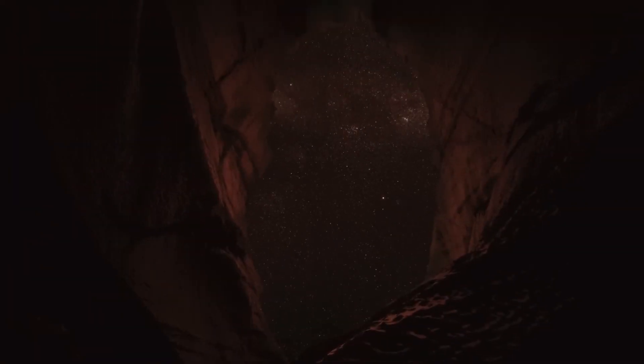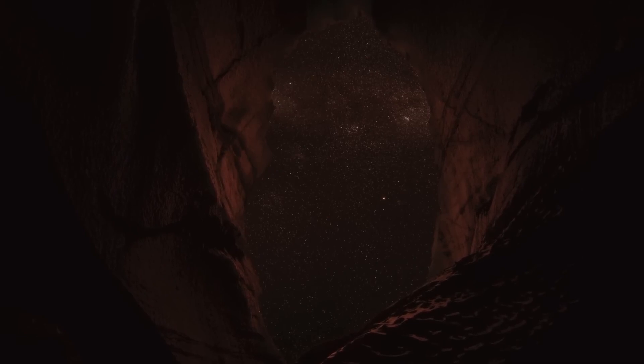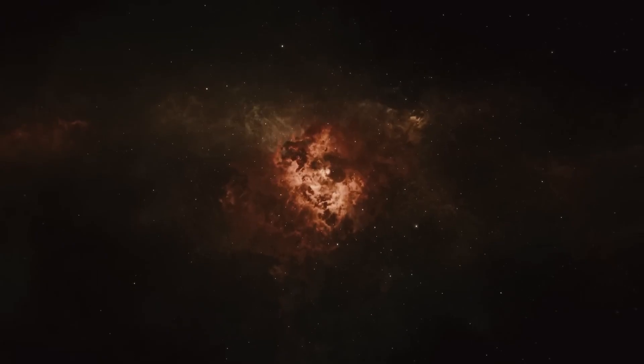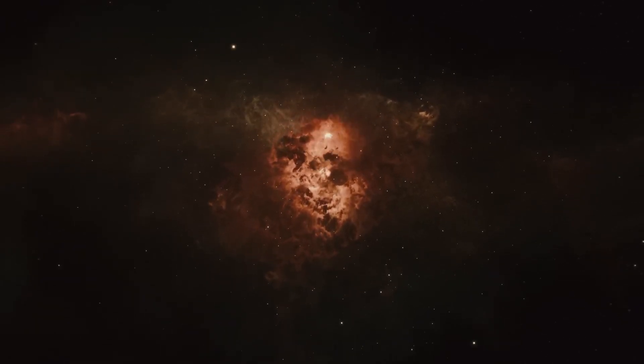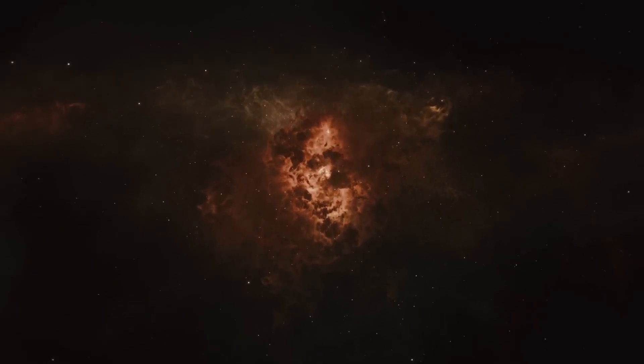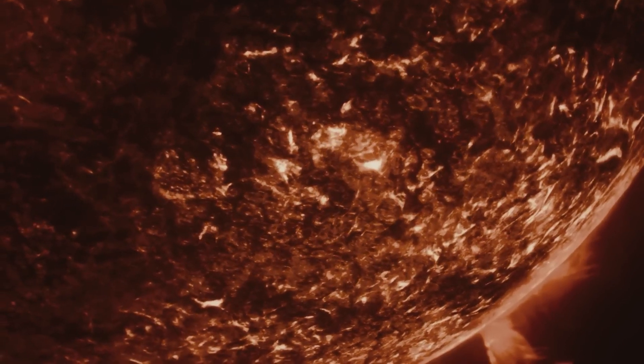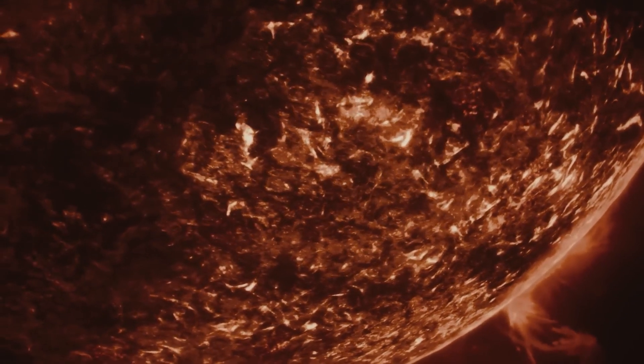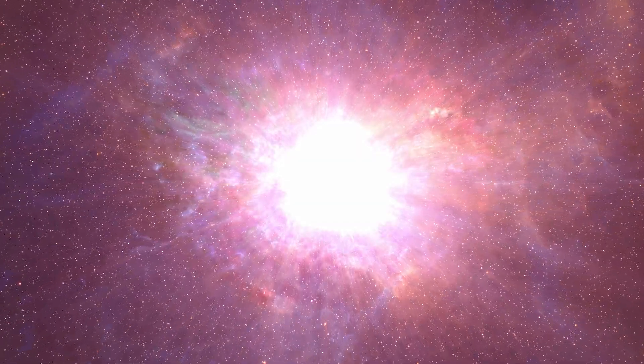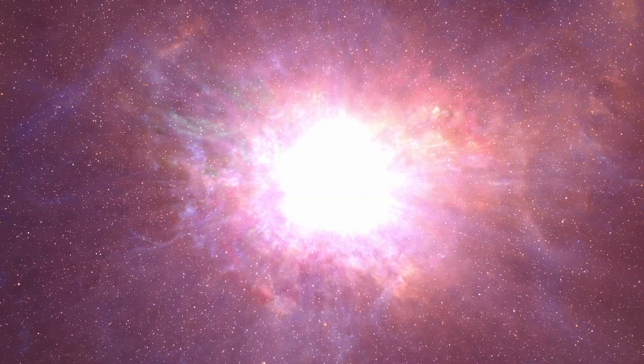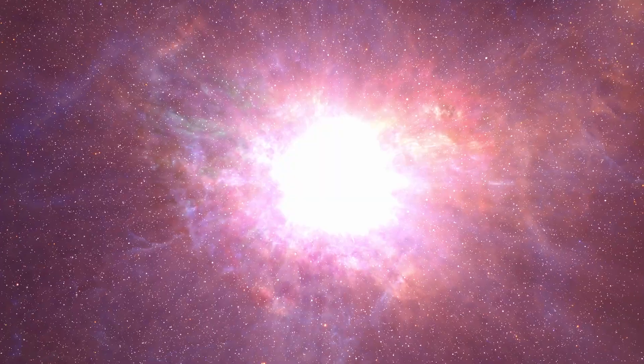A supernova is an extremely bright explosion that occurs when a star reaches the end of its life. Although harmless to life on Earth and safe to observe with the naked eye from our planet, the brightness of a supernova depends on the size of the exploding star. Since Betelgeuse is a very large star, its supernova would be extremely bright, comparable to a crescent moon and visible even during the day.